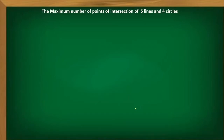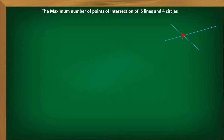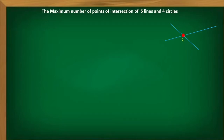First, let us suppose you have two lines. Two lines contribute one point of intersection, because whenever two lines intersect there is one point. If they are not parallel, they must intersect. Since we want the maximum number of points, we have to suppose that every pair of lines intersects — every line is intersecting with every other line.